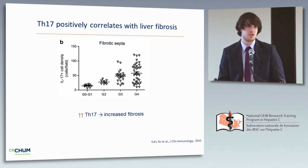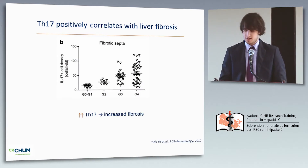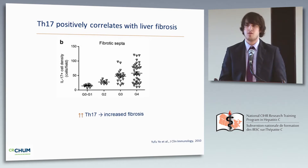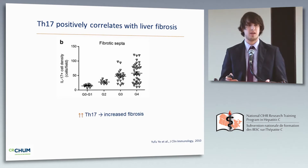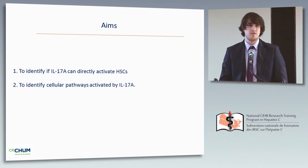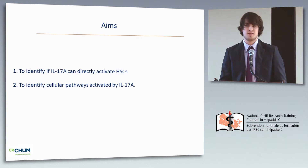Coming back to TH17 cells, what is known is that TH17 cells are increased in the liver of patients with advanced fibrosis compared to patients with lower fibrosis, meaning that IL-17A could be linked to liver fibrosis progression. So the aim of this study was to identify whether IL-17A could directly activate hepatic stellate cells and to identify which cellular pathways are involved in this phenotype.